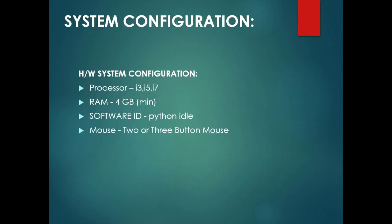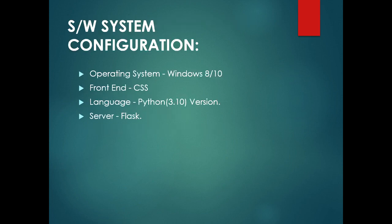Our system configuration — hardware: we are using a processor either i3, i5, or i7, with a minimum of 4GB RAM, using Python IDLE software. Software system configuration: operating system Windows 8 or 10, front-end CSS language Python in version 3.10.